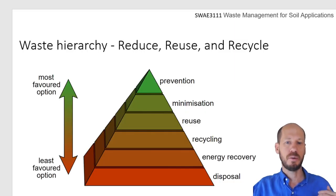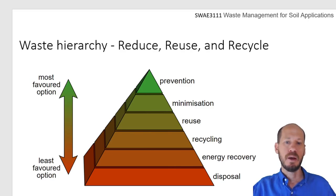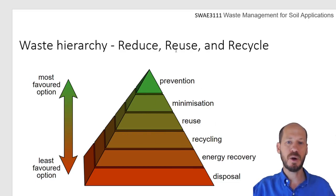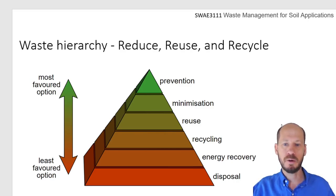When we talk about reduce, reuse, and recycling, we are talking about the waste hierarchy — what is the most favored option for the outcome of waste and what is the least favored. The most favored option is preventing the generation of waste completely through minimization and reuse. We need to ask: can we stop or minimize the generation of this waste before it even happens? For example, do we really need five layers of packaging on a Big Mac from McDonald's? Maybe one or two is enough.